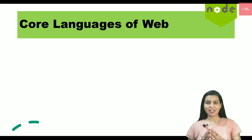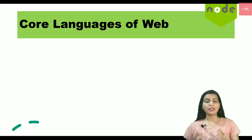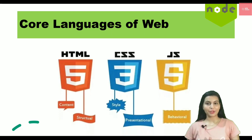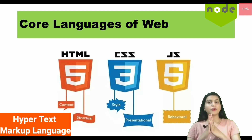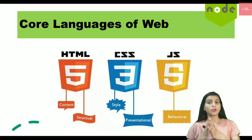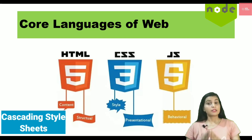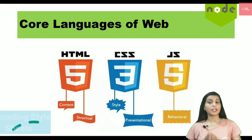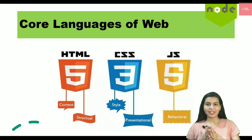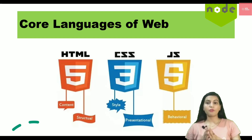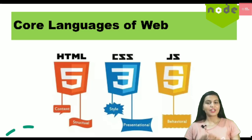Before going into Node.js completely, let's check out the three core languages used for website development: HTML, CSS, and JavaScript. HTML basically defines the structure of your website — whatever static content or structuring you see is designed by HTML. CSS is used to design your website and make it beautiful, so all the colors and designs you see are because of CSS. JavaScript provides interactivity with the browser and makes your website come alive.